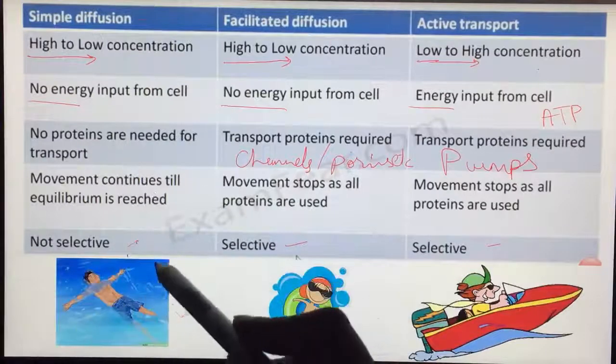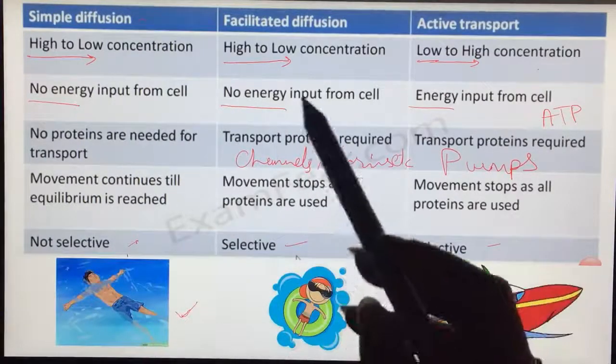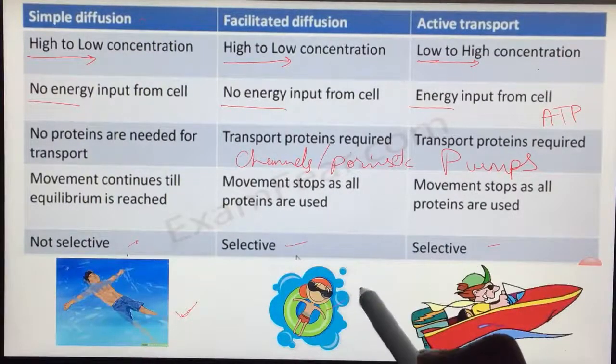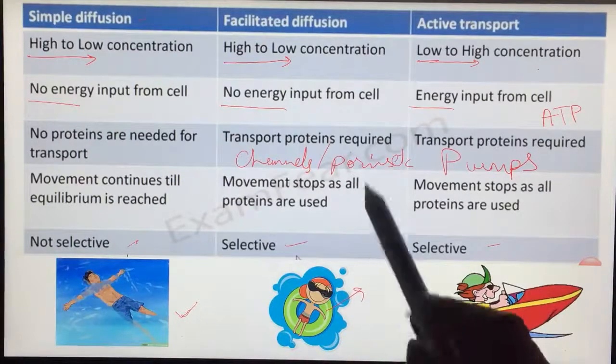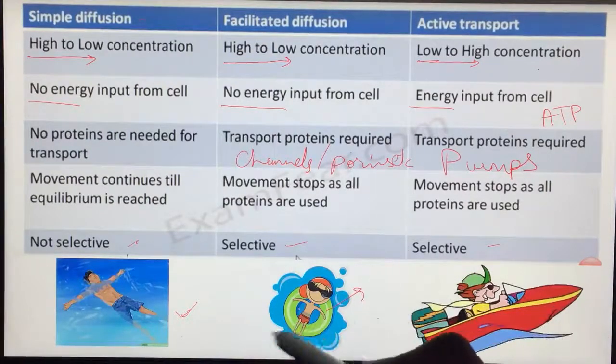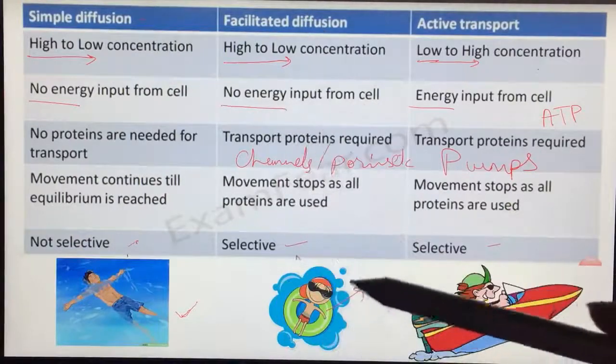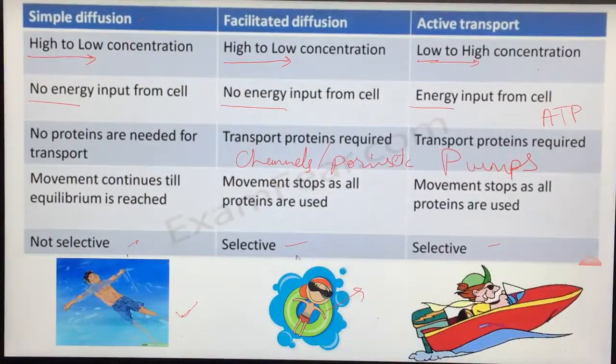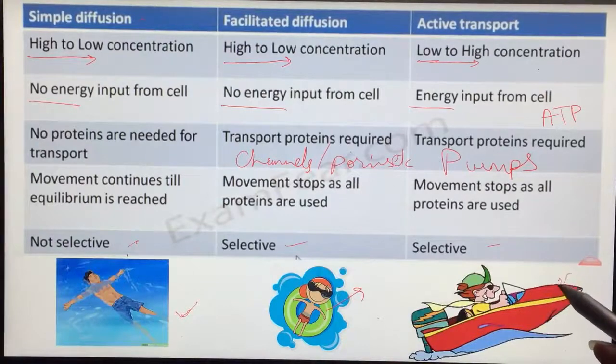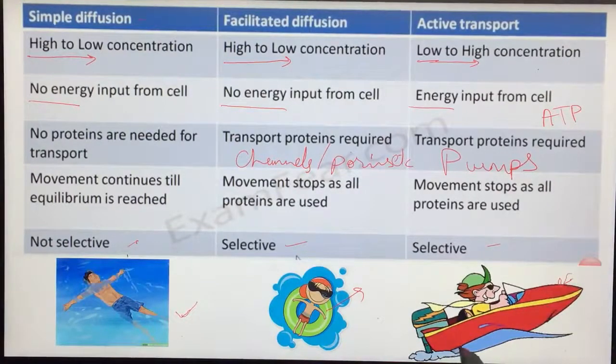But for facilitated diffusion, this tube is an example of the channel or pump. It helps this molecule to go down the concentration gradient with no energy input. But in active transport, this motorboat is the pump which takes up energy from the fuel, runs it, and can go against the concentration gradient as well.